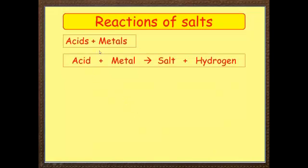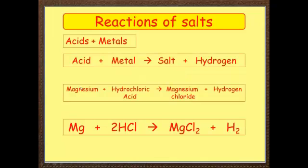The general equation for the reaction of acids and metals is as follows: acid plus metal always gives salt plus hydrogen. For example, magnesium plus hydrochloric acid. Now you know because it's hydrochloric acid, you're going to get the chloride. So it's magnesium chloride plus hydrogen.